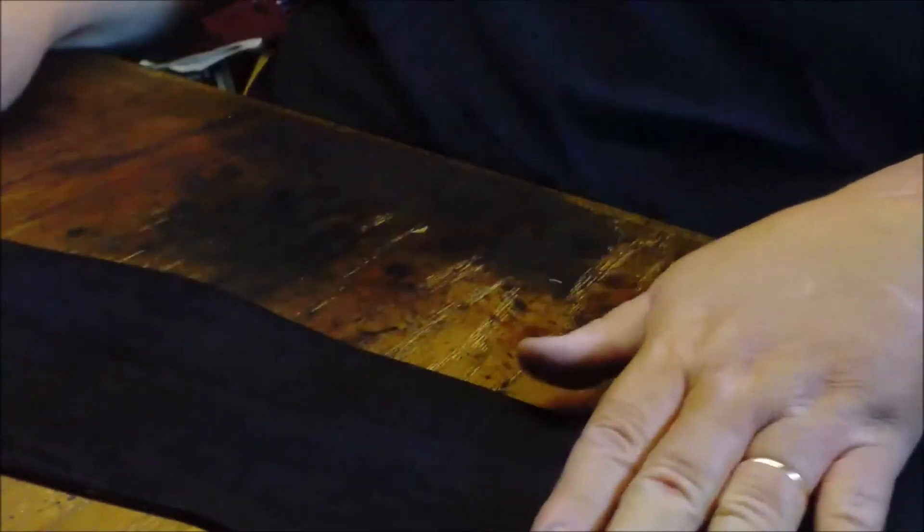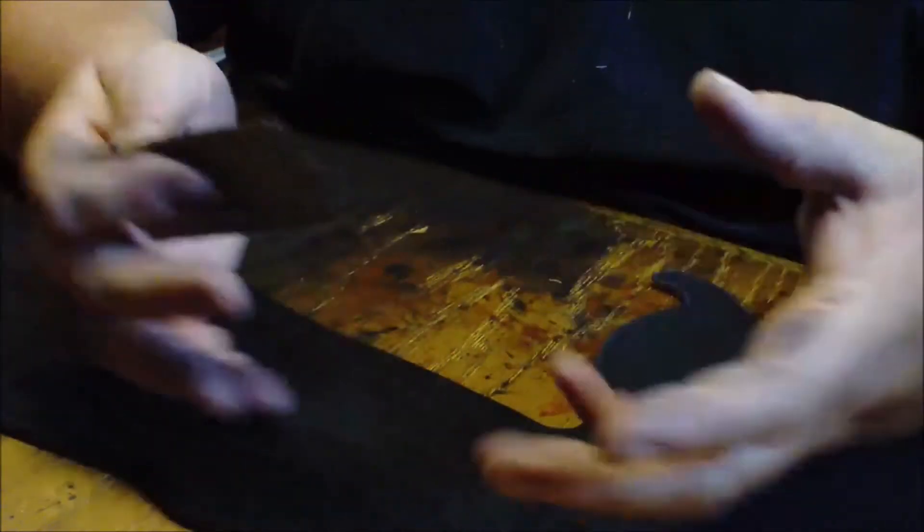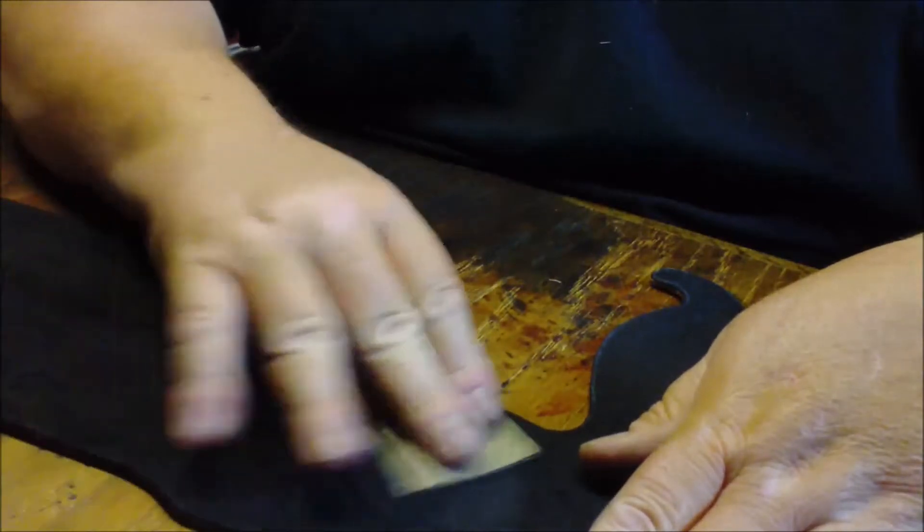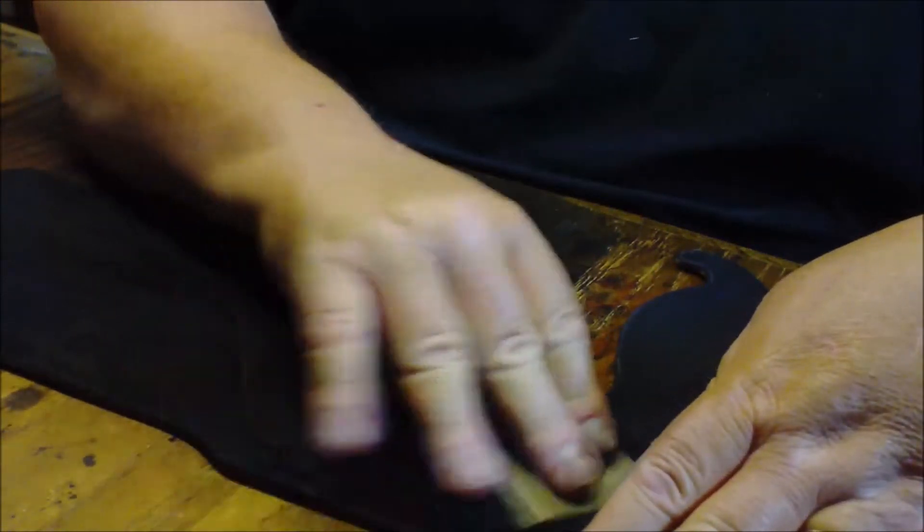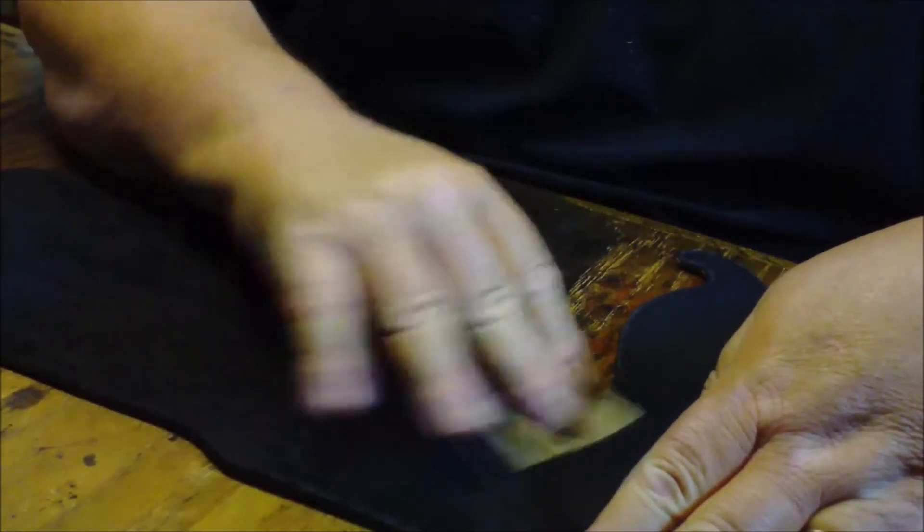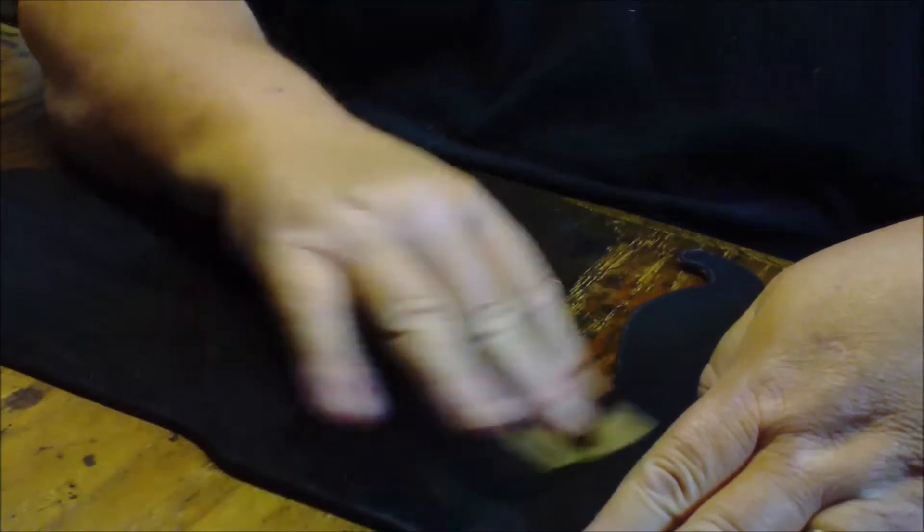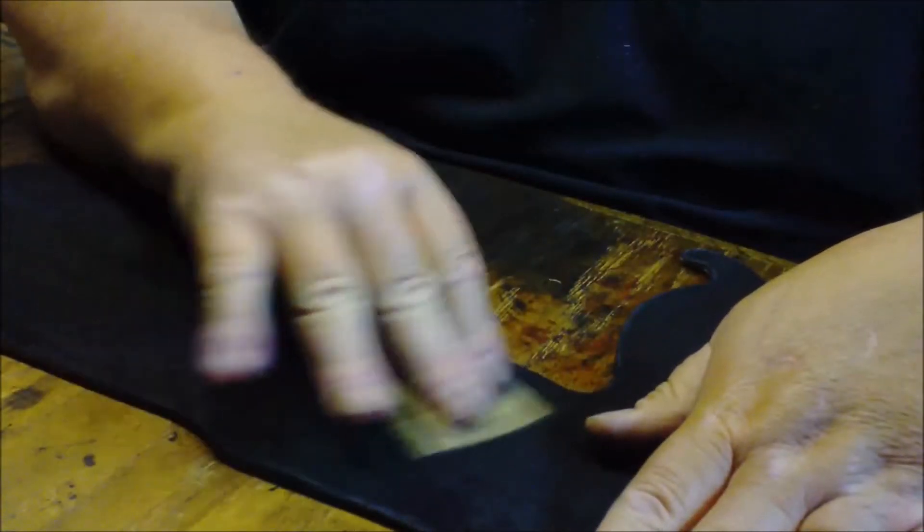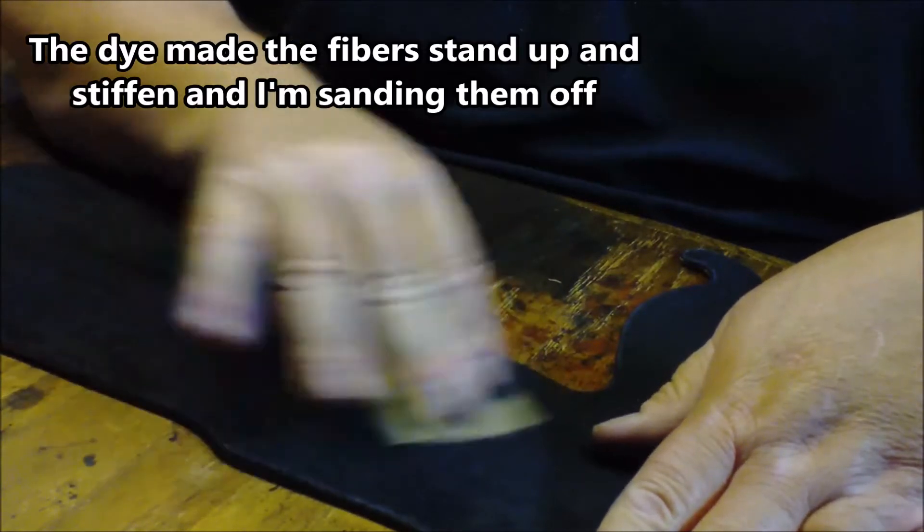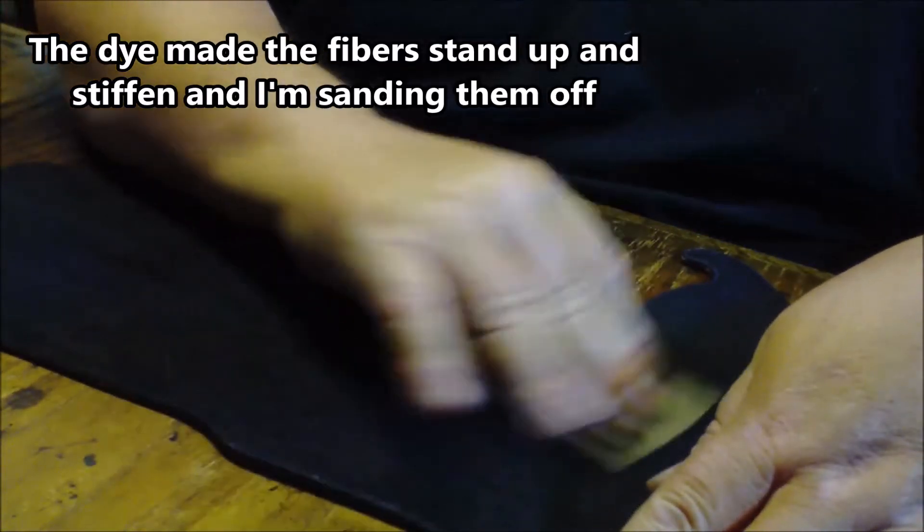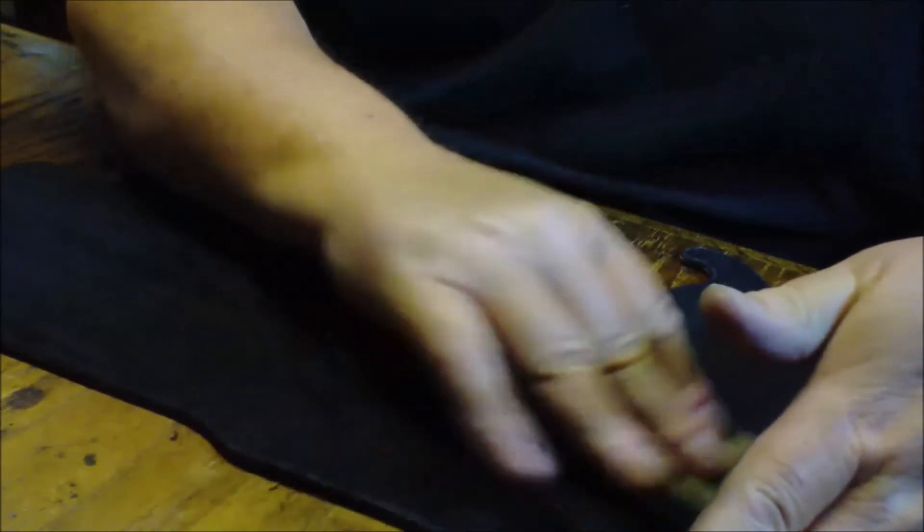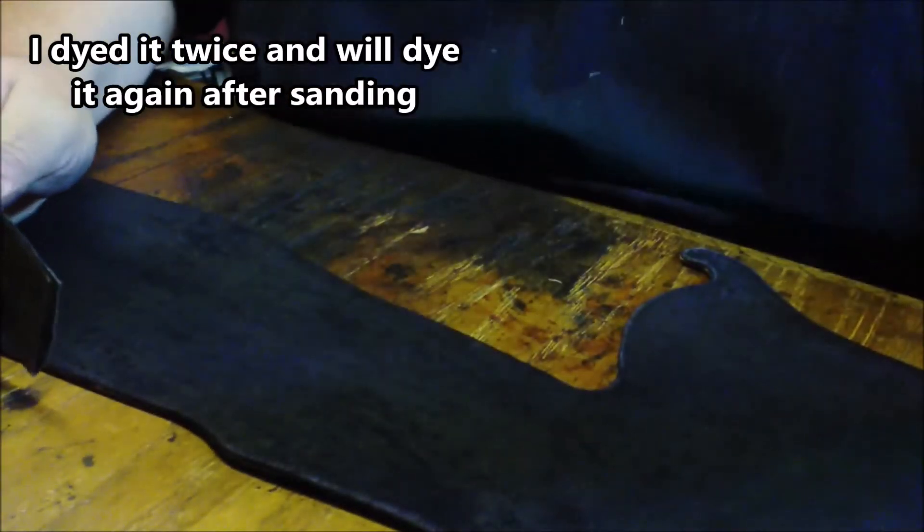What I'm doing to smooth that out is I've dyed it. That'll raise the fibers a little bit. Then I'm just going over it with some 20-grit sandpaper. I'm not using a lot of pressure, just lightly sanding it. It's not going to be perfect and it's not intended to be, but it will be better.